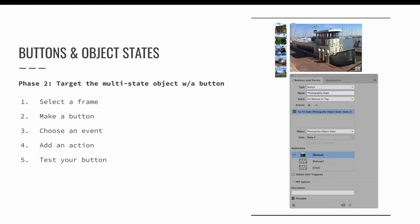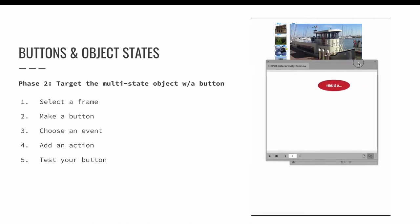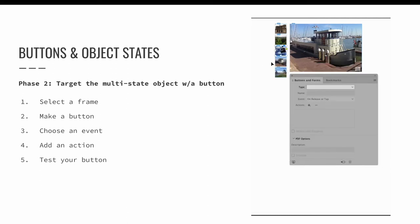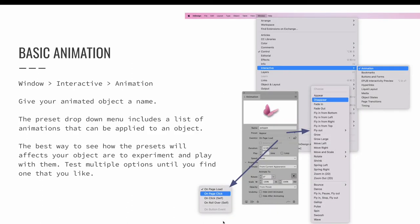Object states activated by buttons can be used to create really creative interactions. What if the objects aren't stacked on top of one another? What if clicking a button on one part of the page opens something elsewhere? What if the object state played an animation or video when activated? There is an animation panel in InDesign that can be used to add basic animation to objects and buttons. Open it via Window > Interactive > Animation.